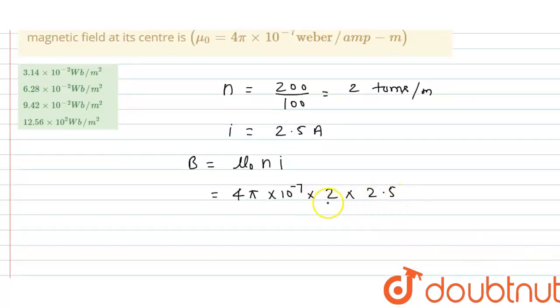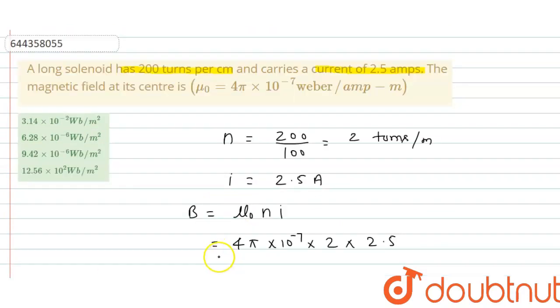From here, 5 times 4 is 20, so this equals 6.28 × 10⁻⁶ weber per meter square.